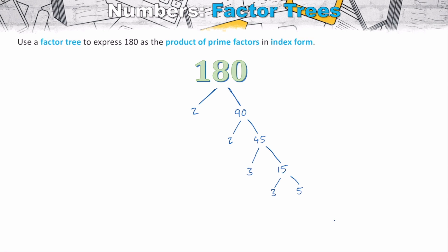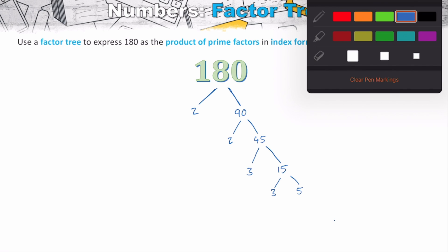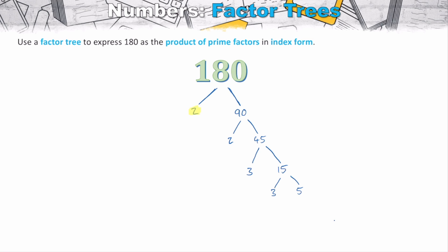We check whether five is a prime number — and it is. So we're finished breaking 180 down into its prime factors. Looking at the end of each branch of our factor tree, we have 2, 2, 3, 3, and 5. Multiplying all of these together — 2 × 2 × 3 × 3 × 5 — gives us back the original number, 180. We've now represented 180 as a product of its prime factors.